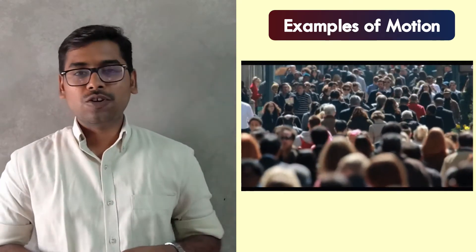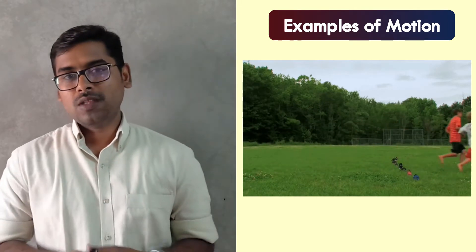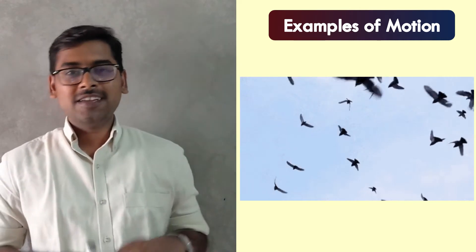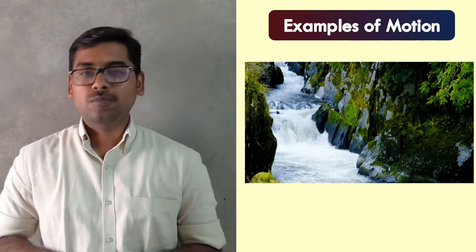For example, here I have this marker — this is the position of the marker, and if this marker changes its position with time, then we say the marker is in motion. Similarly, if you look around yourself, you will find several examples of objects in motion: people walking on the road, kids running in the ground, vehicles moving on the road, birds flying in the sky, and water flowing in the river.